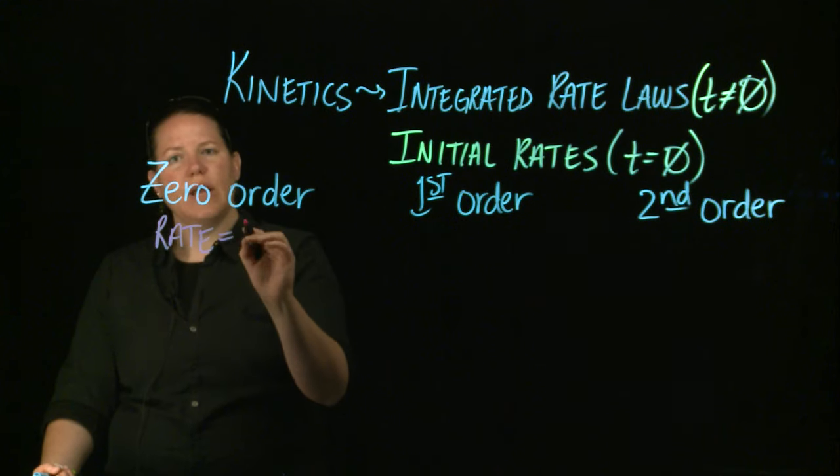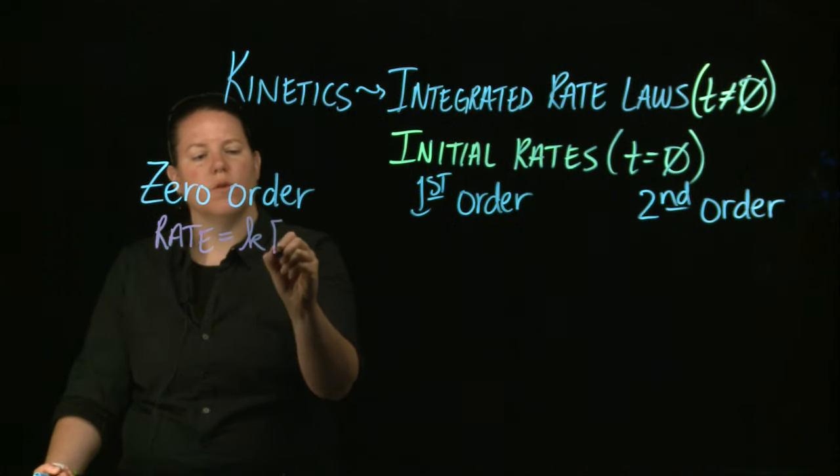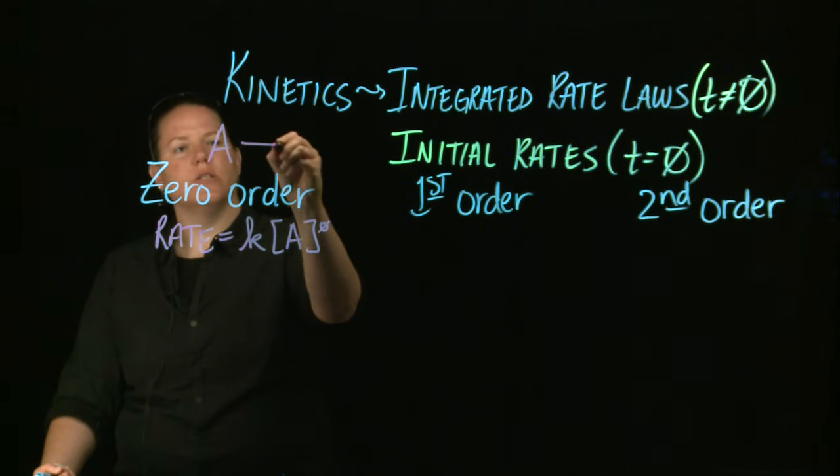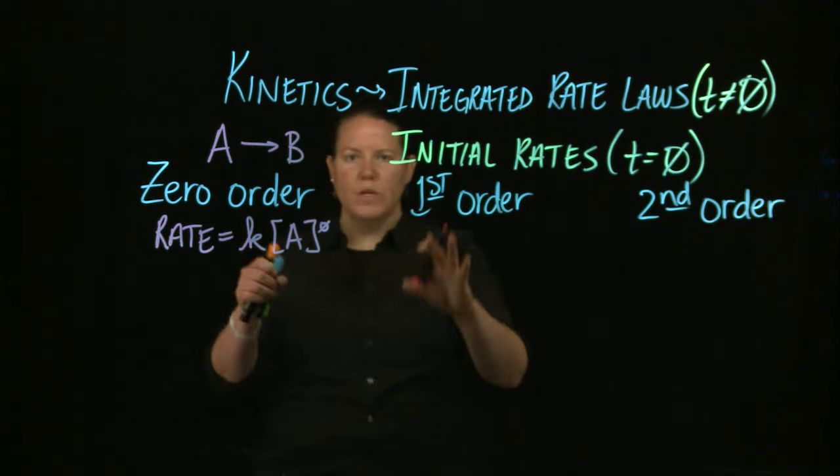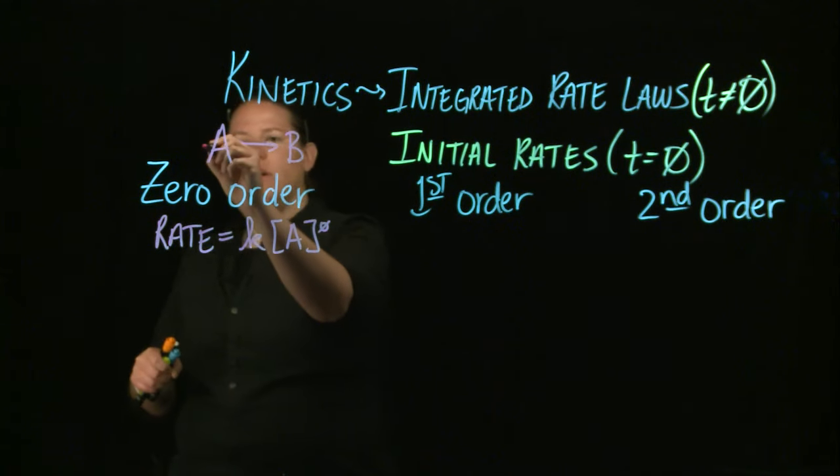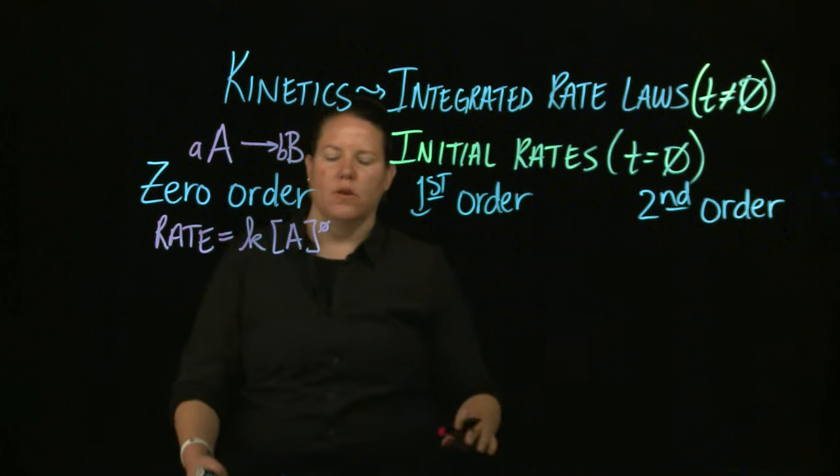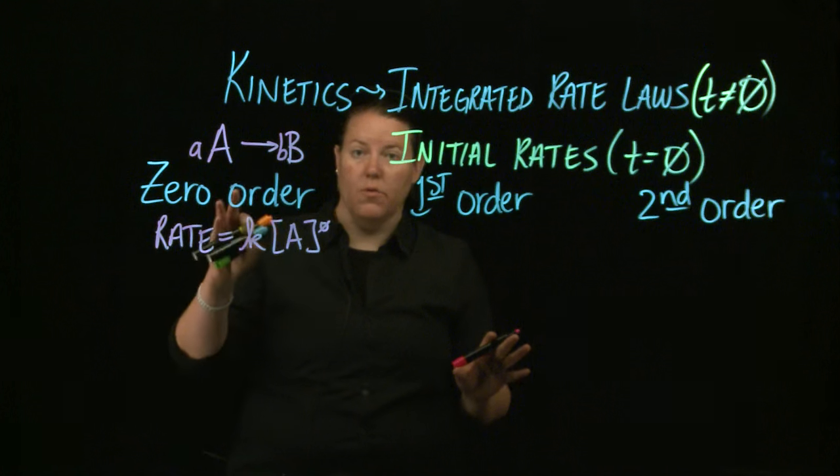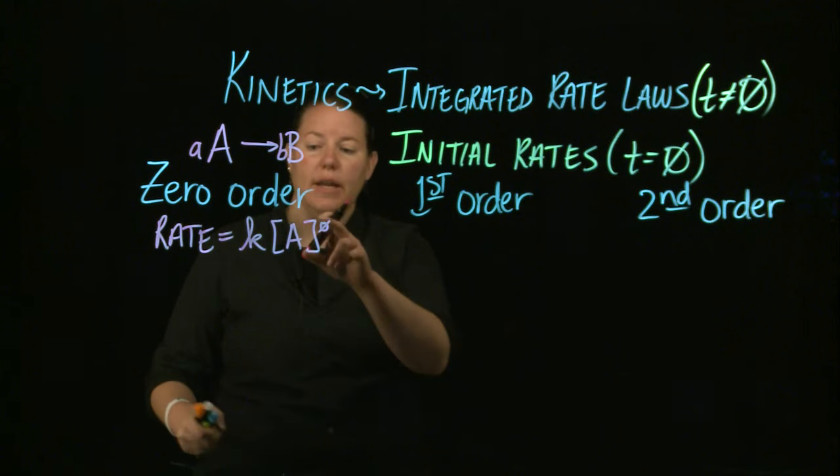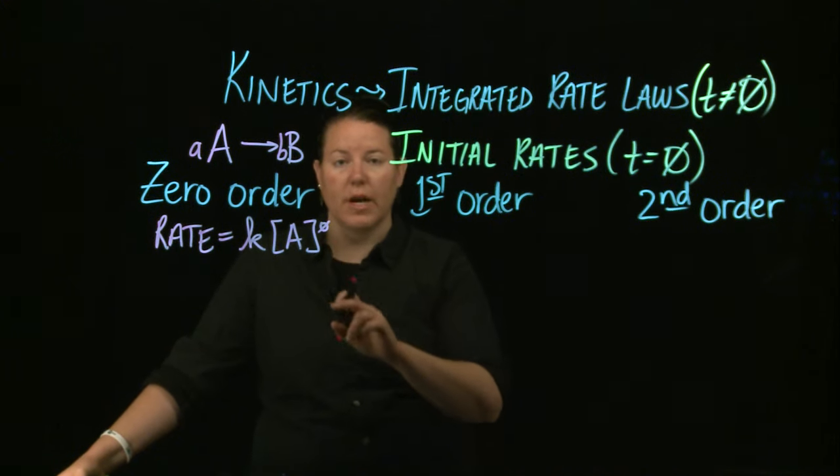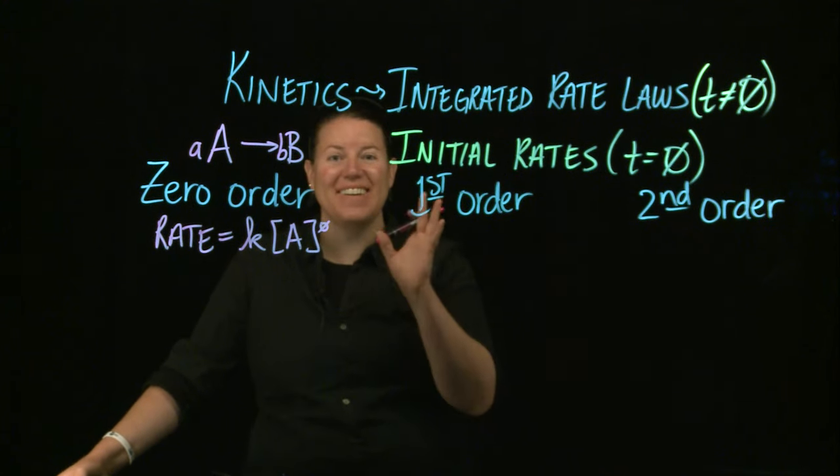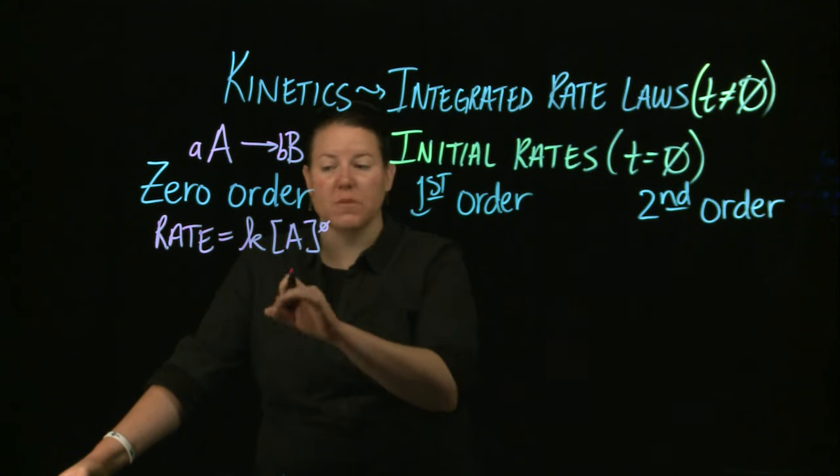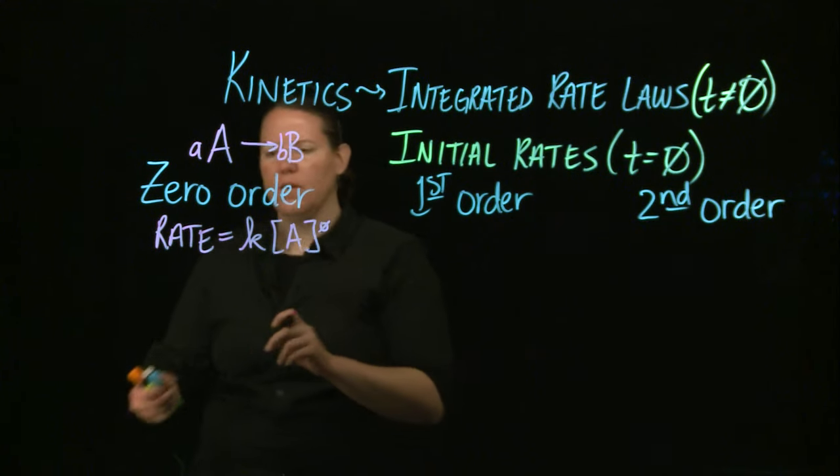What that means is that the rate law has a zero order. And what I'm assuming here is that we're talking about a reaction that just goes from A to B, a really simplified reaction. And you could have coefficients as part of that. But that's basically what we're talking about. We're talking about the reactant is A, the product is B. And here what this means is that the concentration of the reactant doesn't matter at all, not even a little bit in terms of the rate. But the only thing that matters in terms of the rate is the rate constant, which is K.